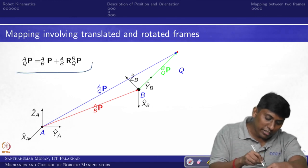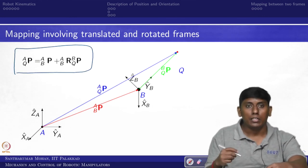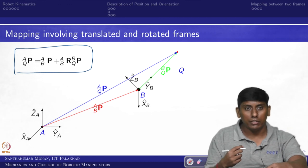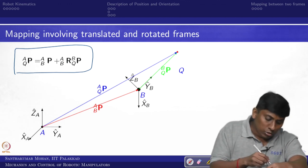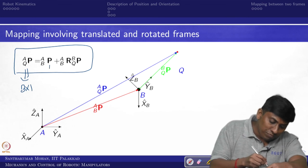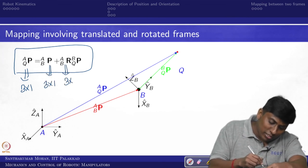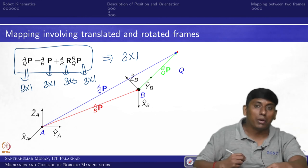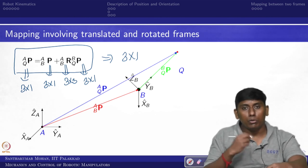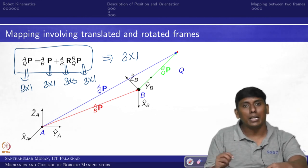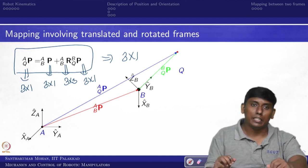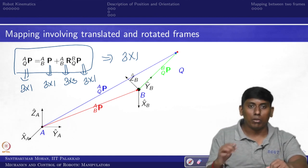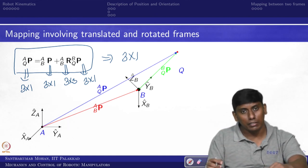This gives us one straightforward relation for the general mapping involving translated and rotated frames. Checking dimensions: the result is 3×1, the rotation matrix is 3×3, and the position vectors are 3×1, so overall the dimension is 3×1. In the next lecture we will see how to combine this into a single entity — that will be identified in the upcoming lecture.